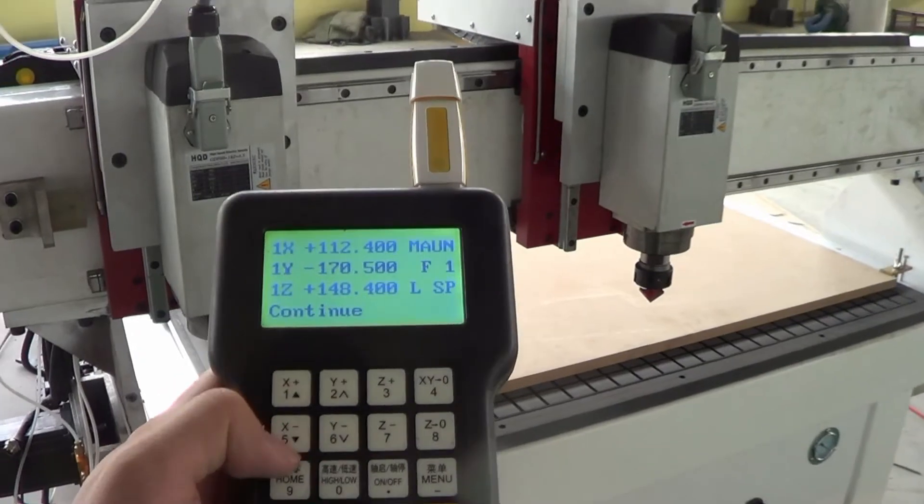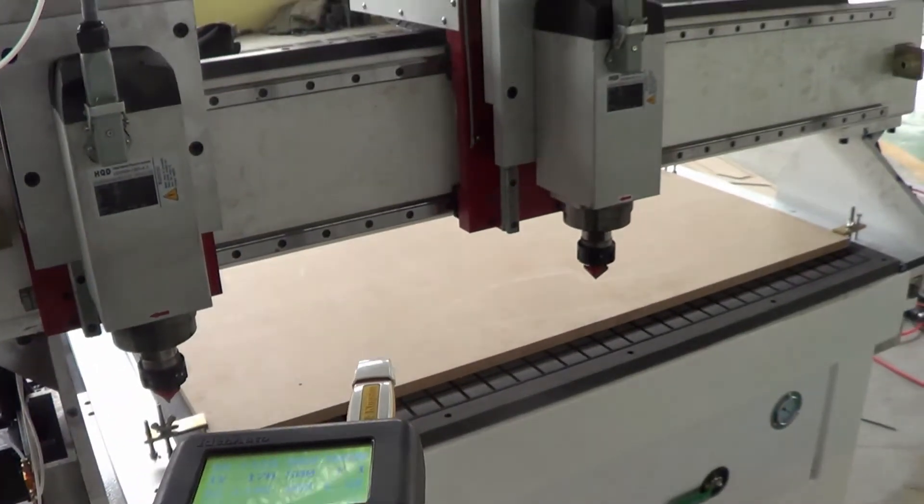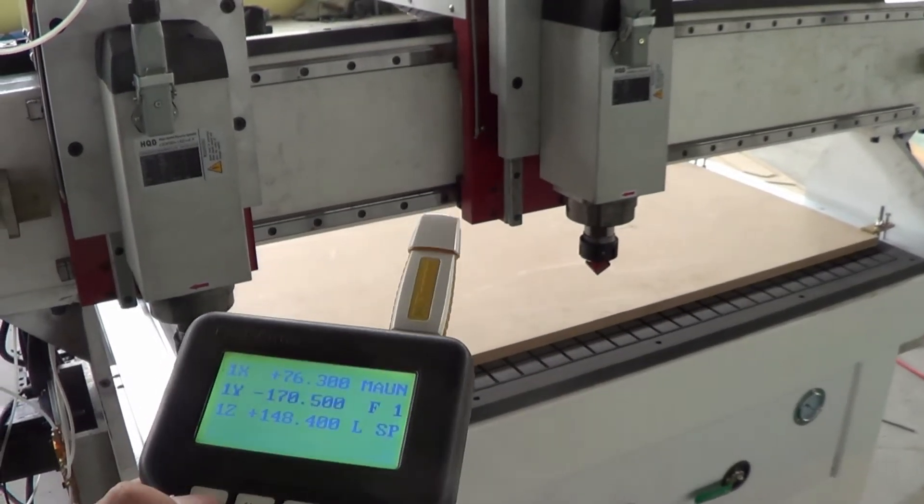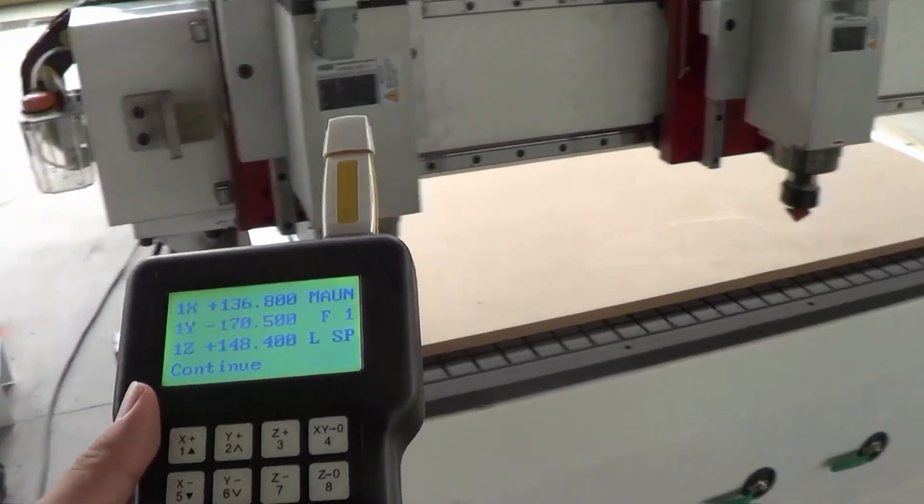Then we can use the X minus and the plus button to move the spindle 2.